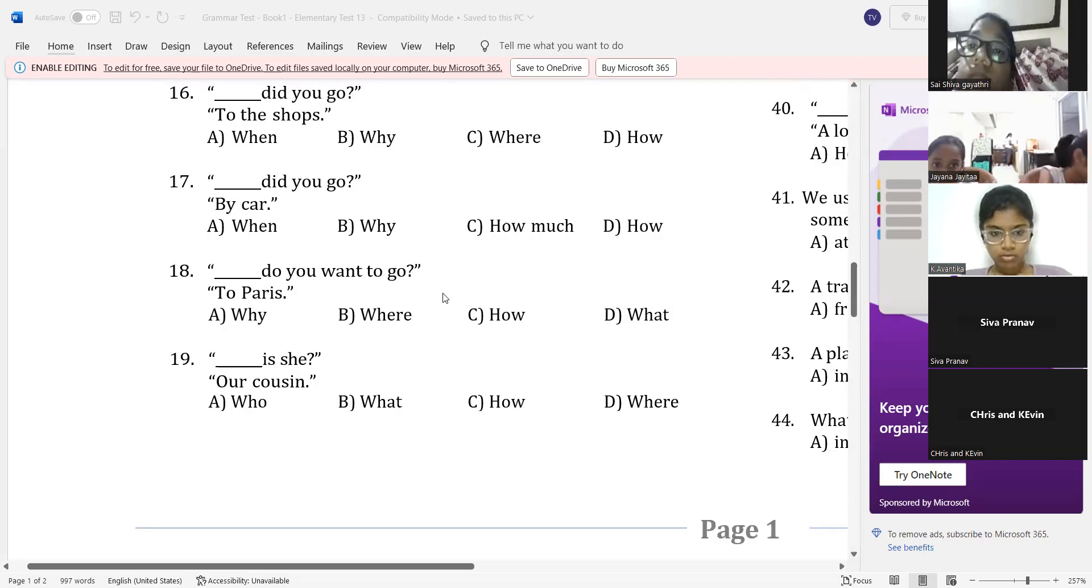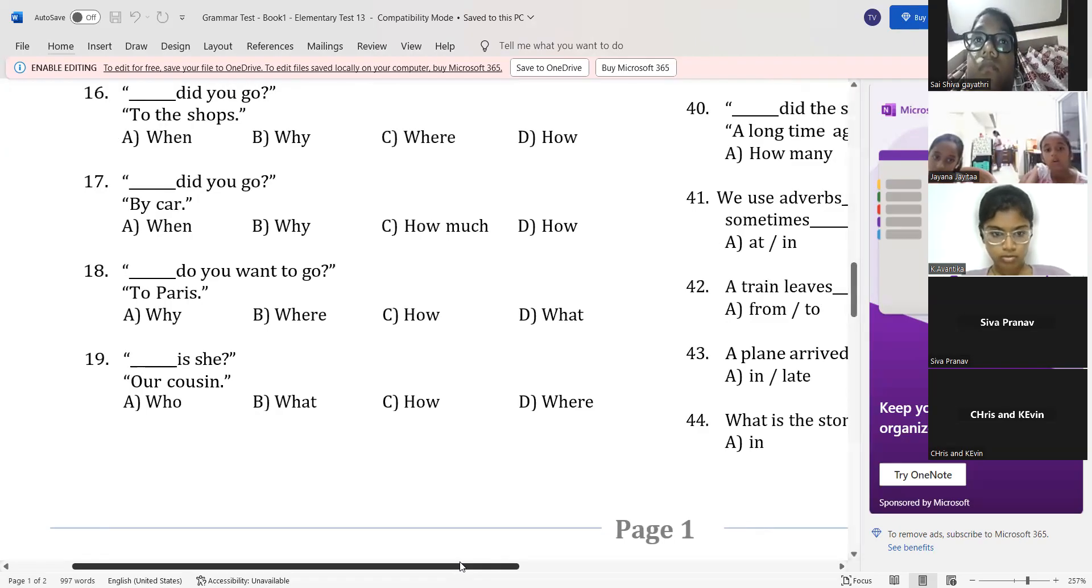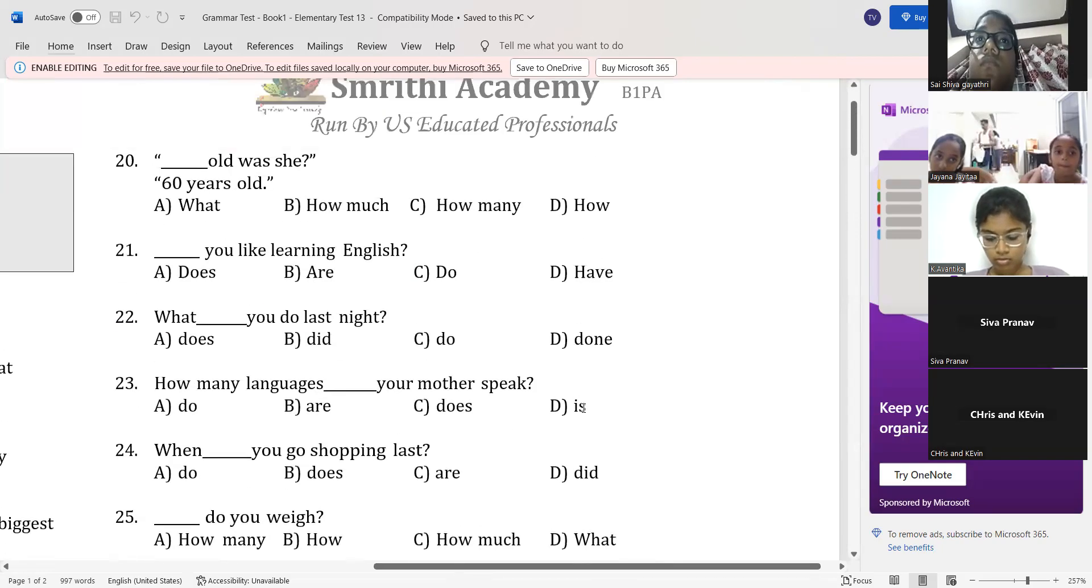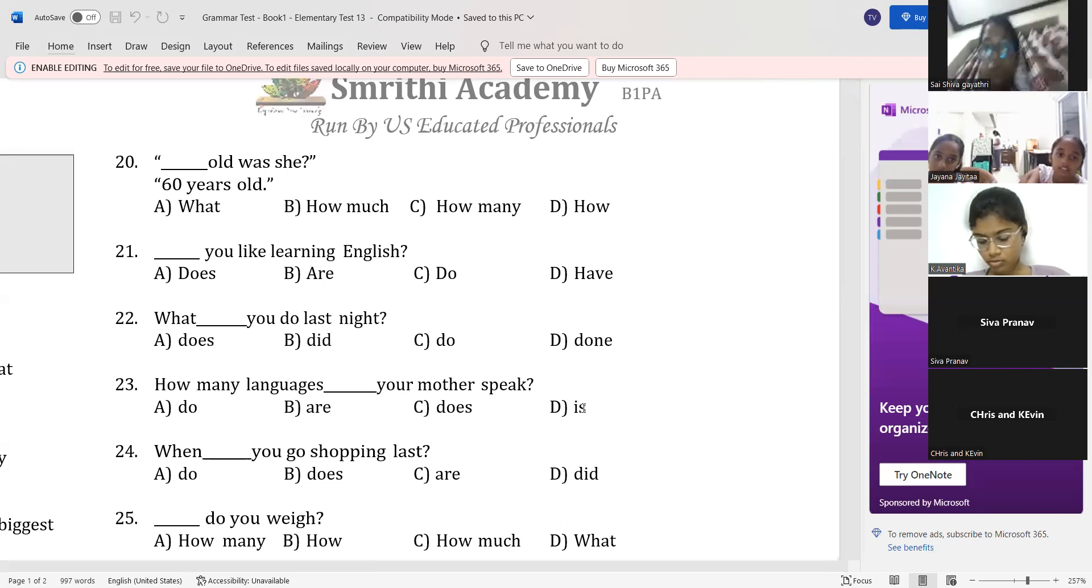19, 20, 21. Jaina. Yes, sir. Dash, Dash is she. Our cousin. Who is she? Our cousin. Super. Go ahead. 20. Dash, how old was she? 60 years old. How old was she, 60 years old? Last one. Dash, do you like learning English? Do you like learning English? Very good. Super. Good job.